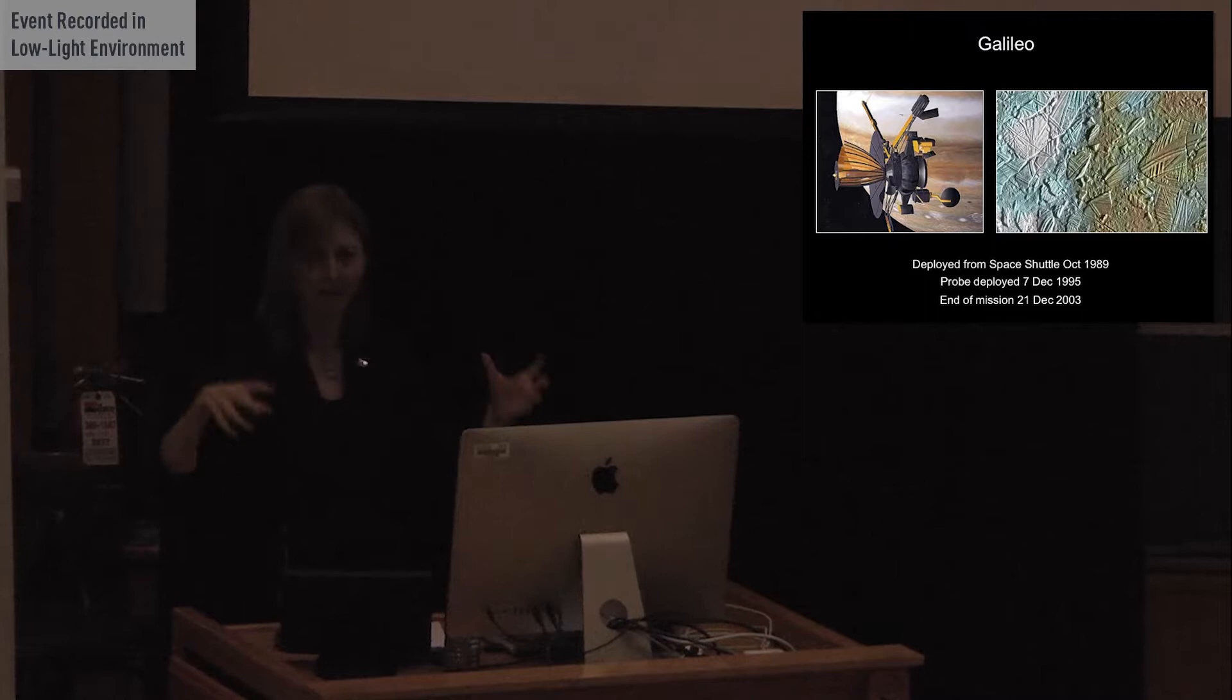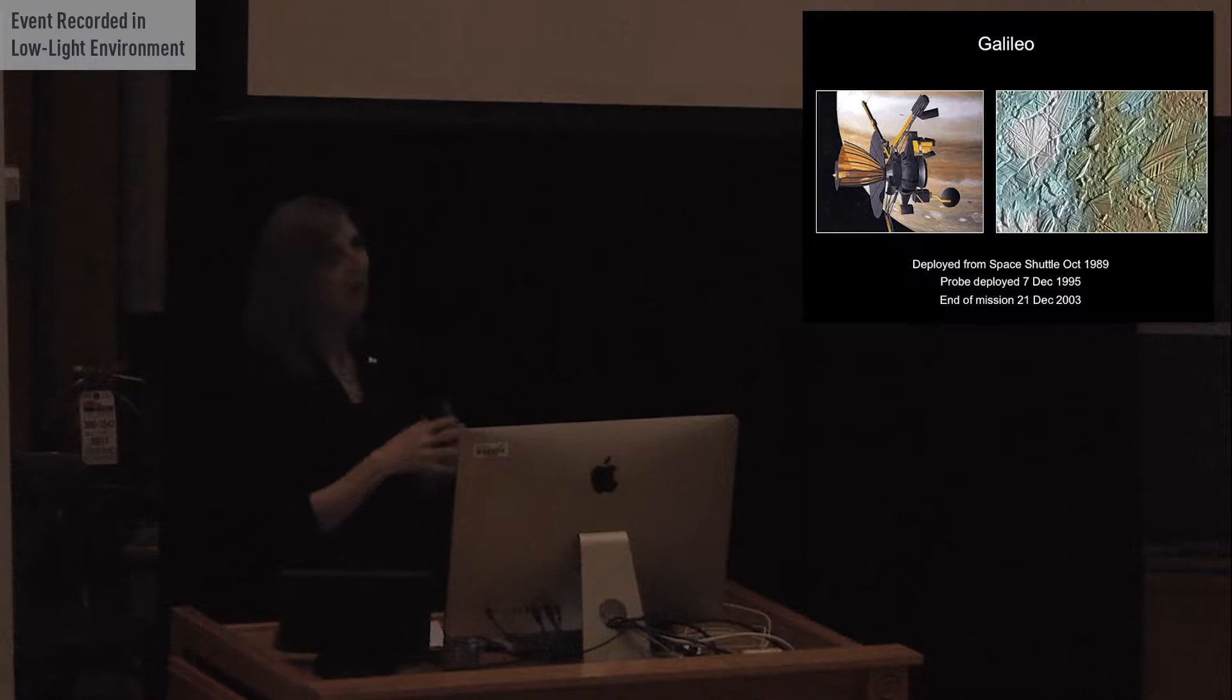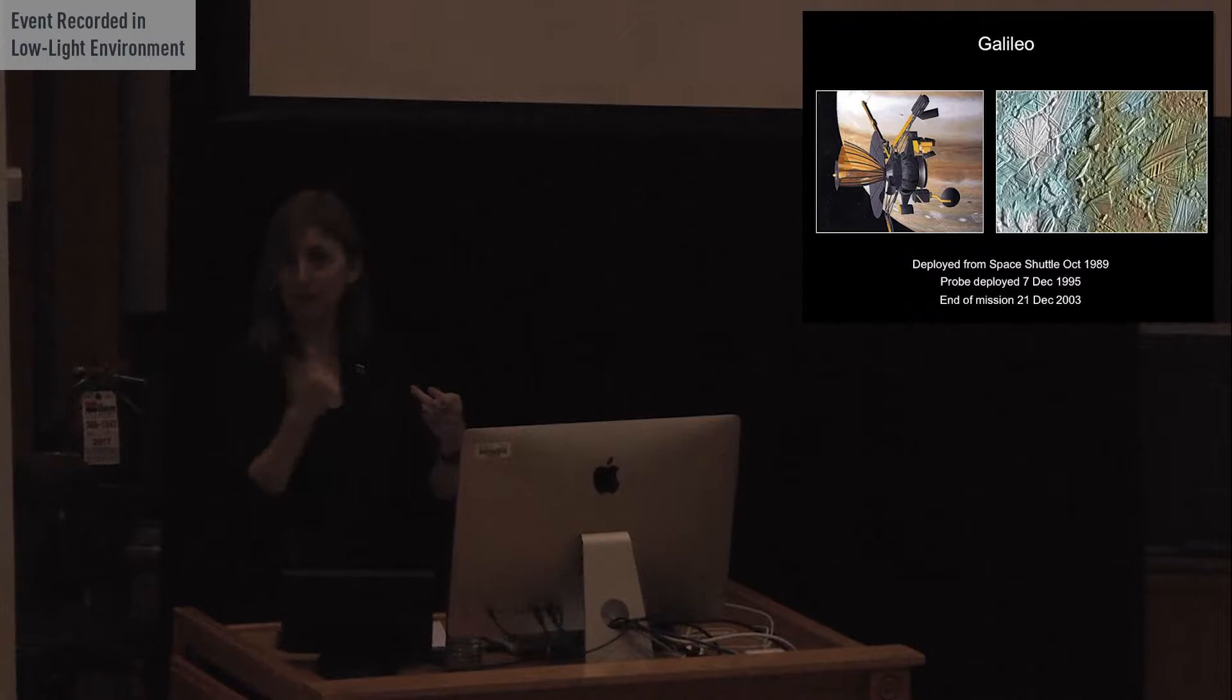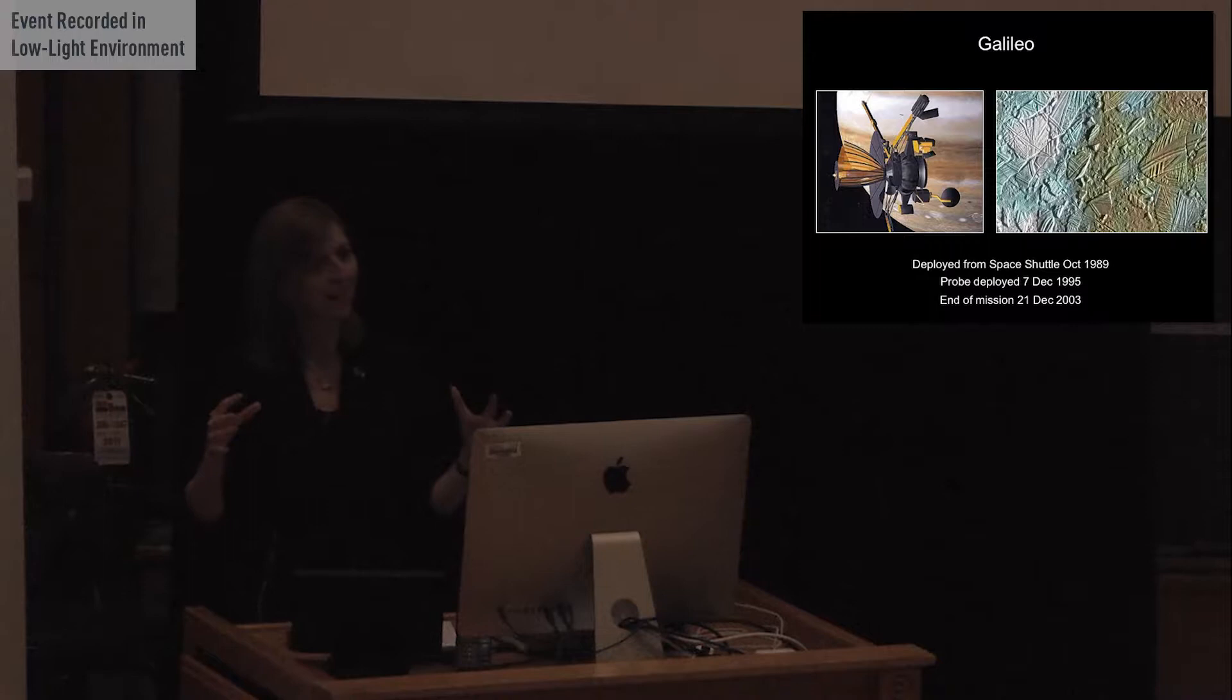So Galileo did drop a probe into Jupiter, and that probe was fully successful. It went into the red spot of Jupiter and measured things like the water content of the atmosphere. But the data return from Europa itself was actually from the whole Jovian system. It was in orbit around Jupiter, flying around the whole system. But the data return was only about 10% of what it had planned originally, which means that we have a lot of very interesting and tantalizing information about the moons, but we don't have anything like what we expected to have.